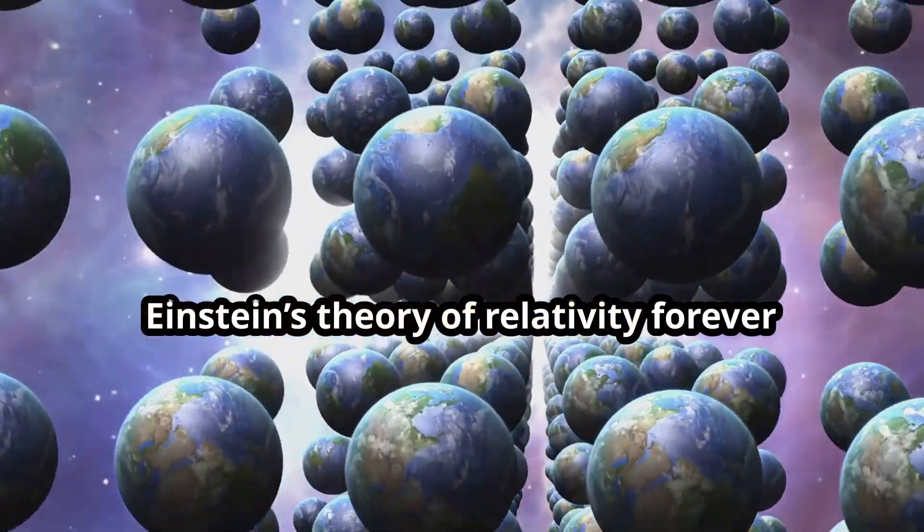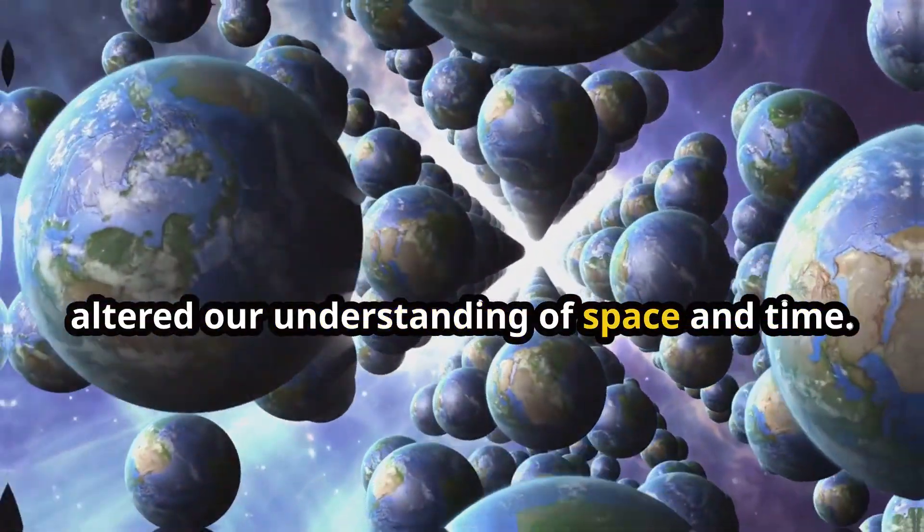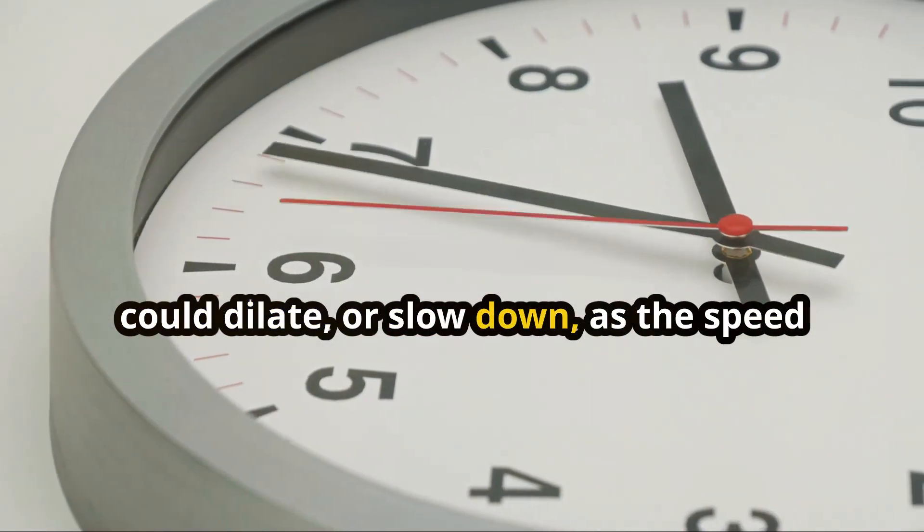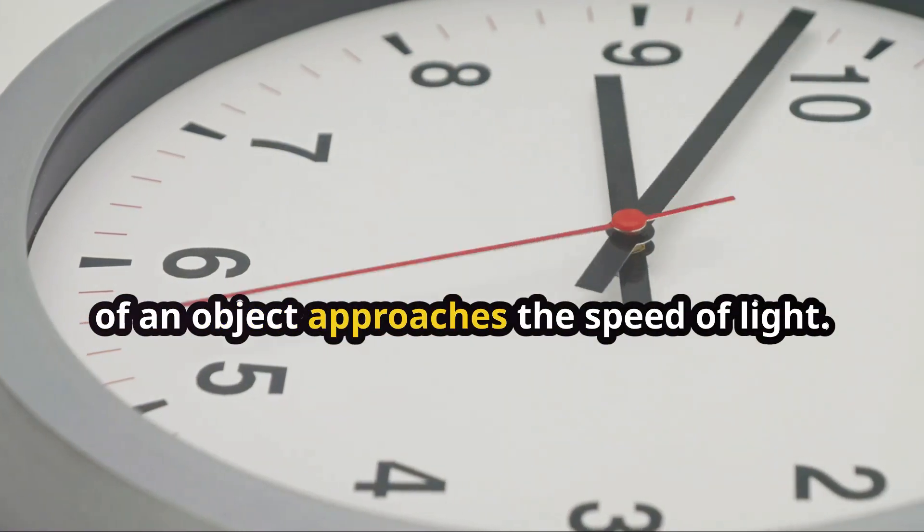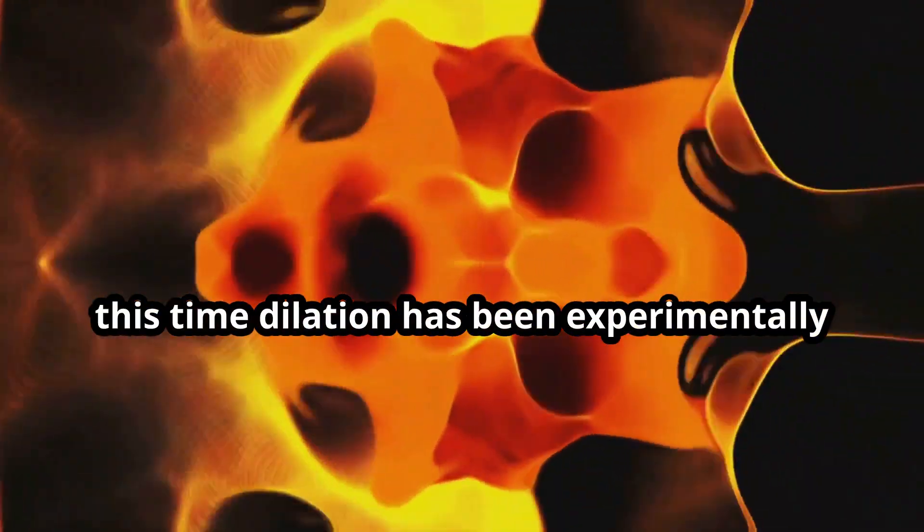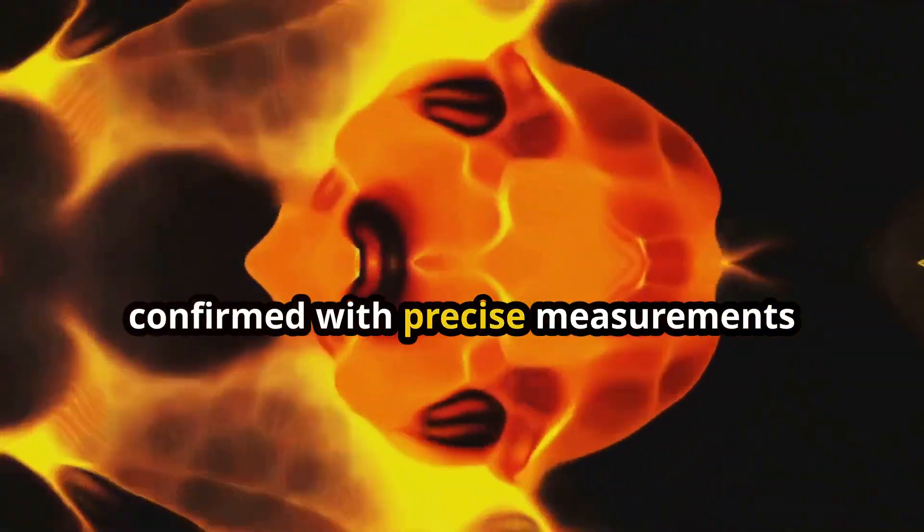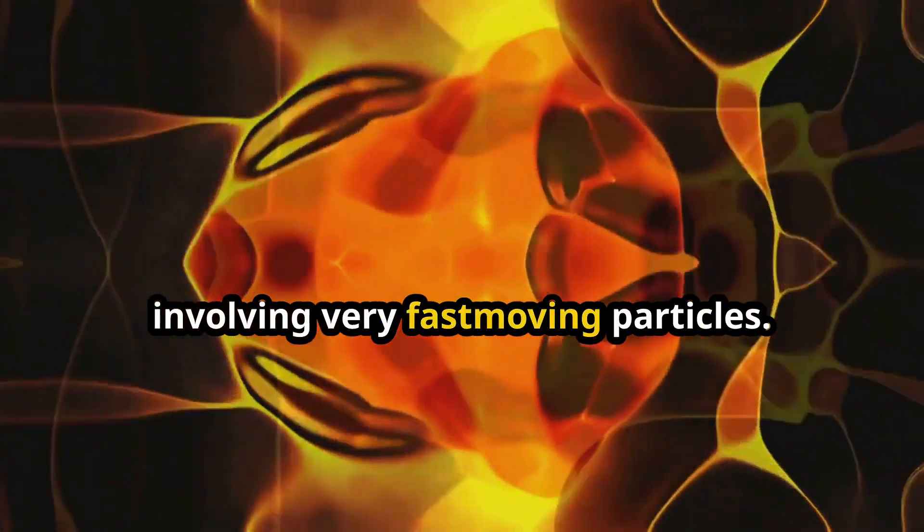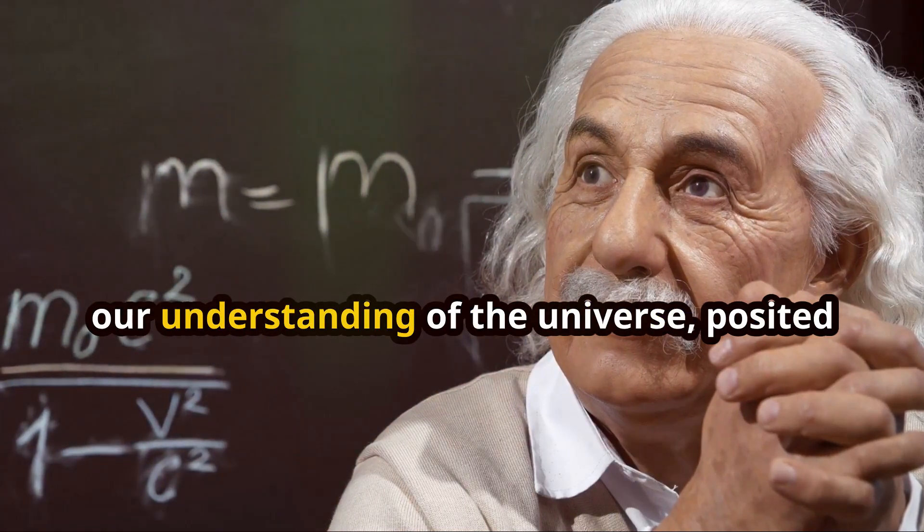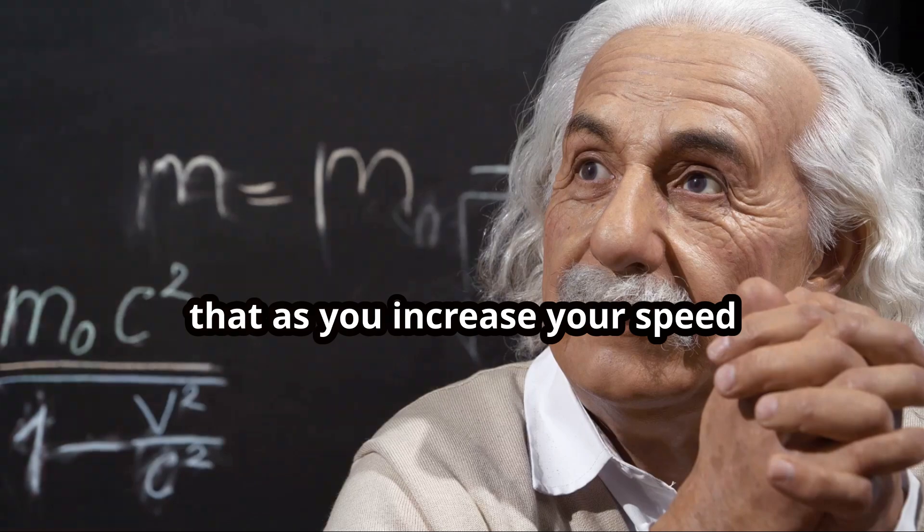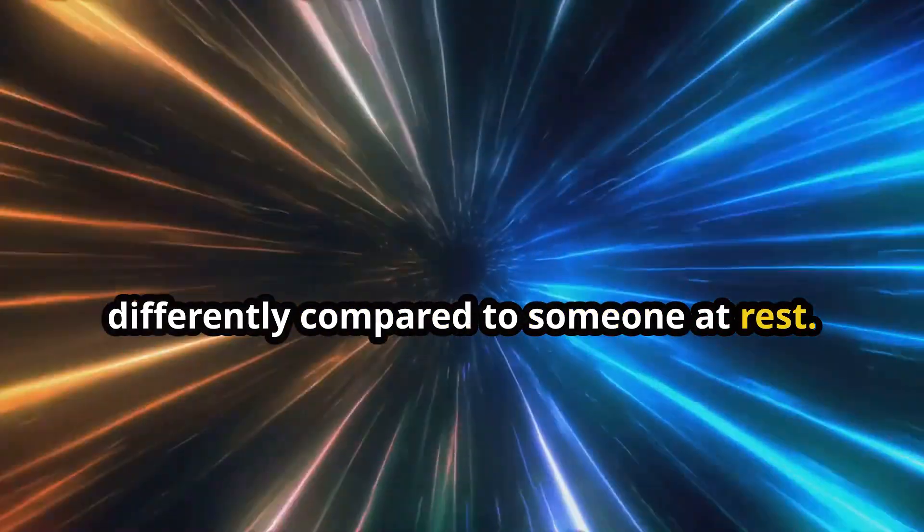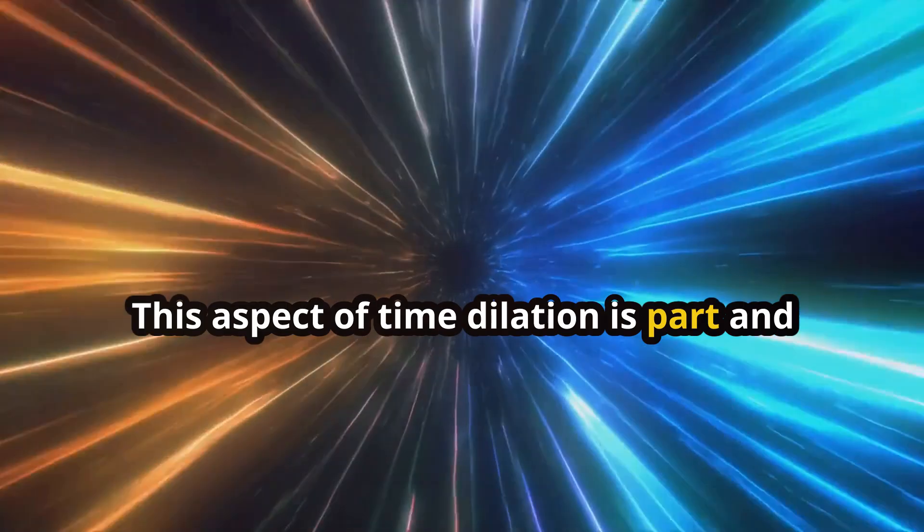Einstein's revolution: relativity and its implications. Einstein's theory of relativity forever altered our understanding of space and time. It introduced the stunning idea that time could dilate or slow down as the speed of an object approaches the speed of light. This is not mere theoretical whimsy; this time dilation has been experimentally confirmed with precise measurements involving very fast-moving particles. Albert Einstein, whose theories reshaped our understanding of the universe, posited that as you increase your speed dramatically, time itself functions differently compared to someone at rest.